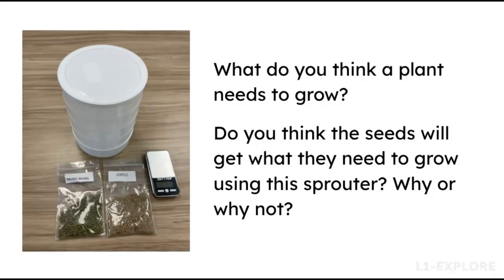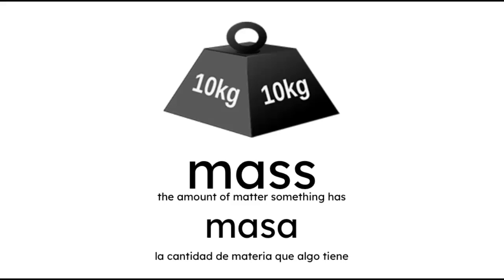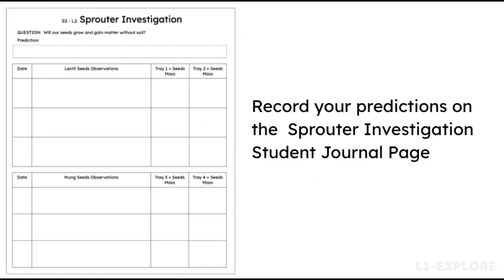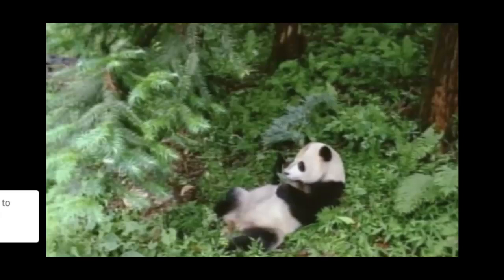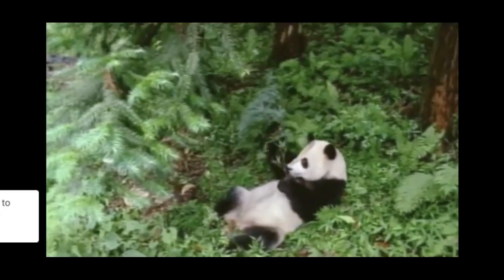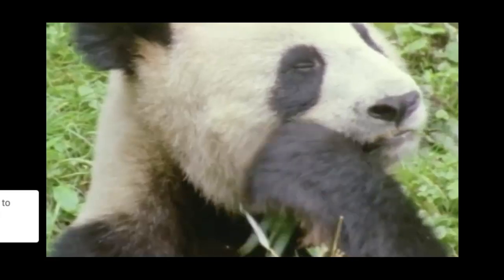For the Explore portion, you'll start part one of the sprouter investigation. You'll show students the sprouter and seeds, demonstrate how you will use the sprouter to grow the seeds, and ask students about what they think plants need to grow. You'll also talk about how you can track the growth of the sprouts. You can post and discuss the MAS vocabulary card. You'll have students record their predictions in the sprouter investigation student journal page. You'll then show students a video of animals eating and have students turn and talk to discuss what they notice, why they think animals eat, and why we might eat pizza.